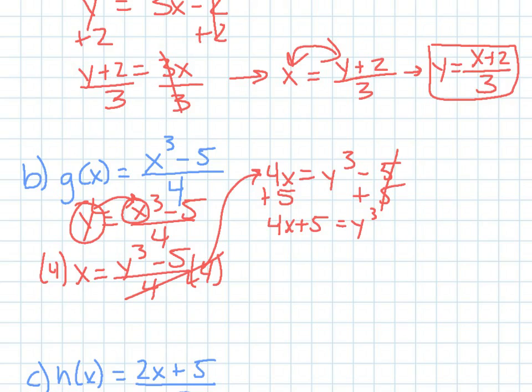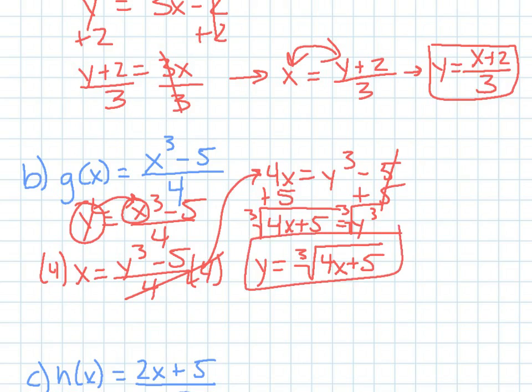And then because it has a cube root or a cube power, I'm going to take the cube root to get rid of it. So now y equals the cube root of 4x plus 5. And that would be my inverse.